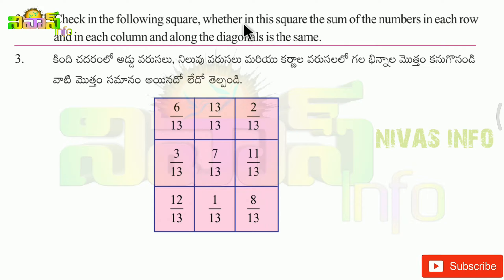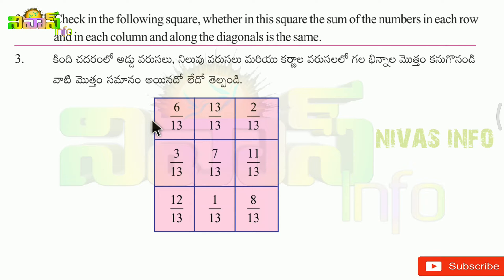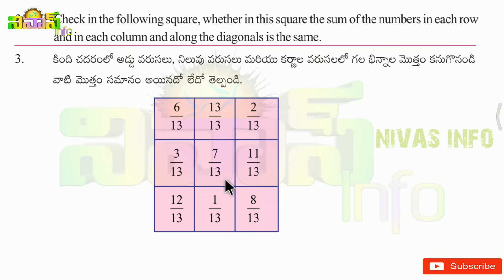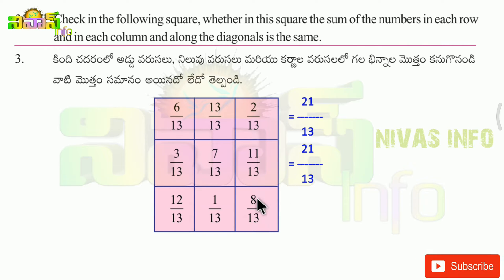Check in the following square whether the sum of the numbers in each row, each column, and along the diagonals is the same. We check row-wise: 6, 13, 2 = 21. Next row: 3, 7, 11 = 21. Next row: 12, 1, 8 = 21.